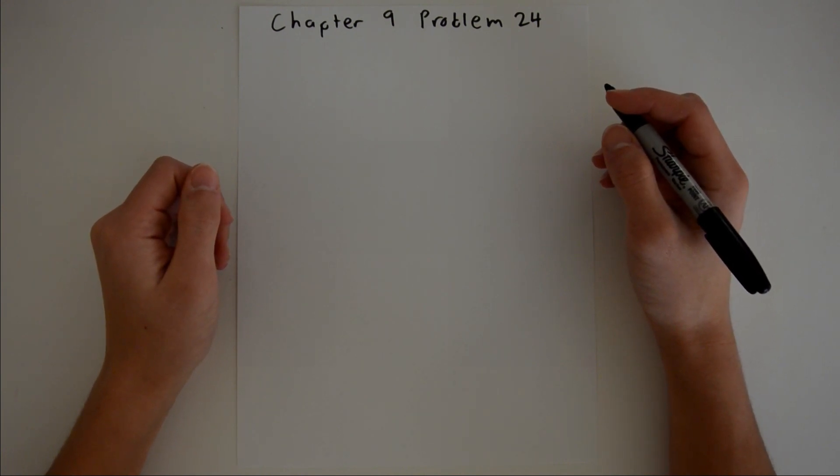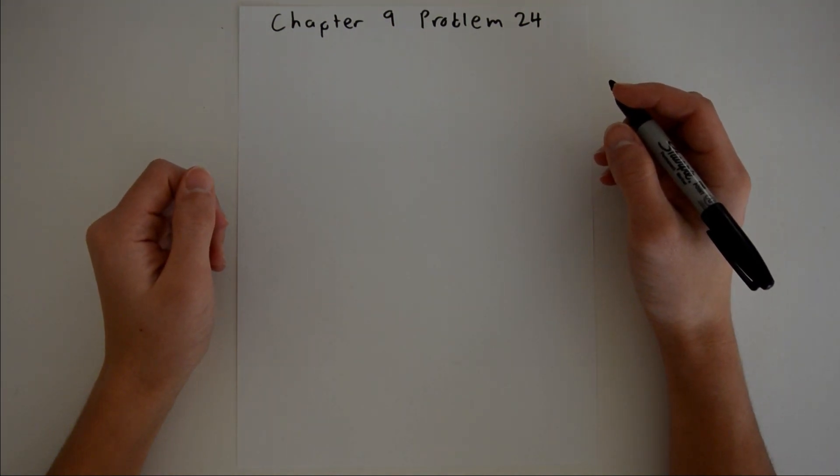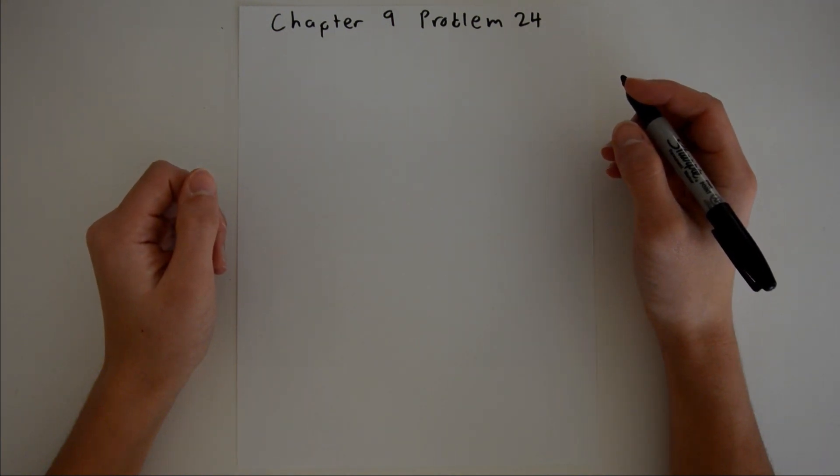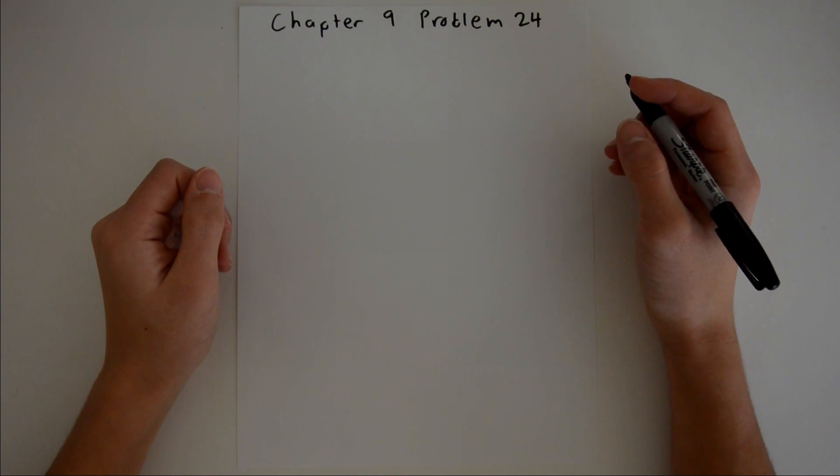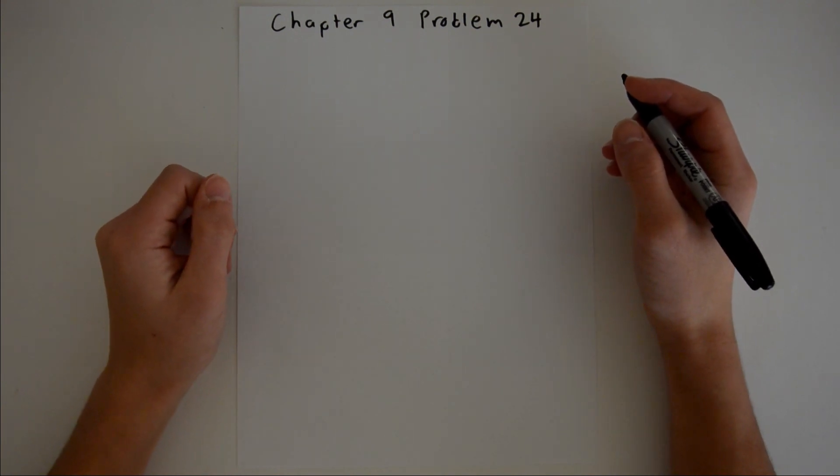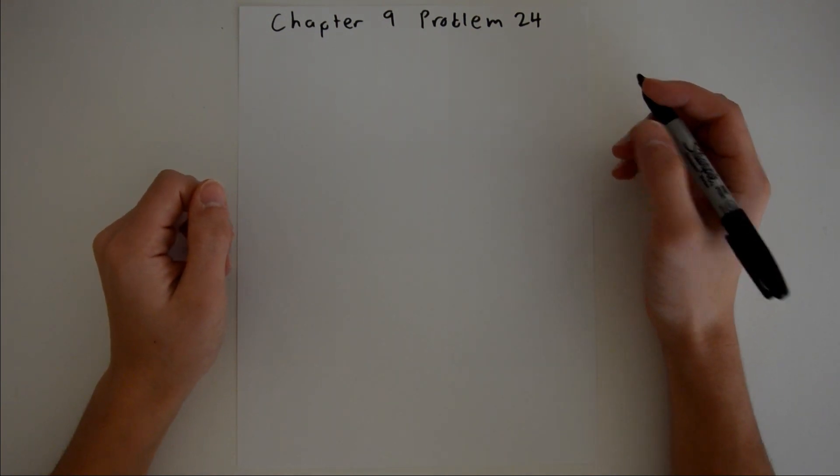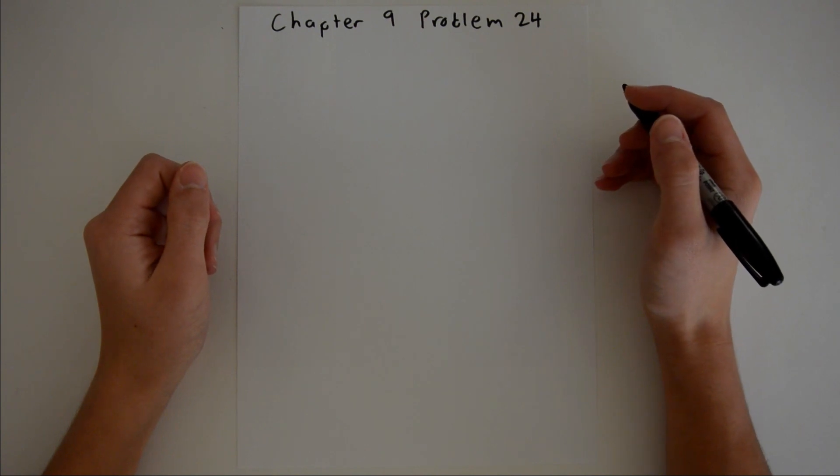Chapter 9 is all about center of mass and linear momentum, and specifically Question 24 is about the classic chair prank, where one person is about to sit down and another person pulls the chair out from under them, making the person fall to the ground. We are asked to find the impulse and average force of that person when they hit the ground.